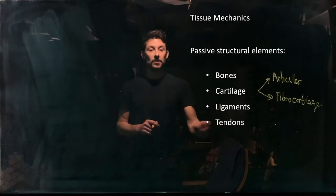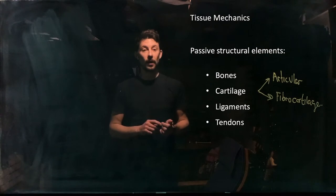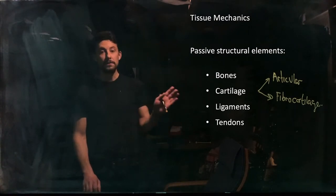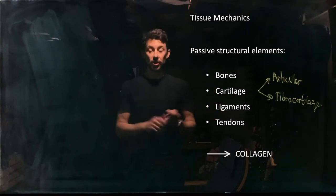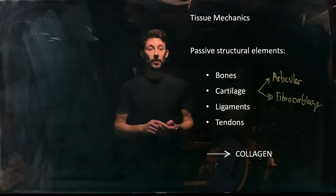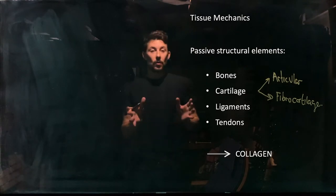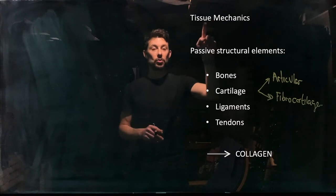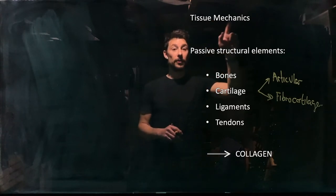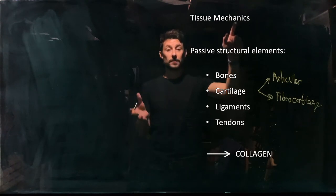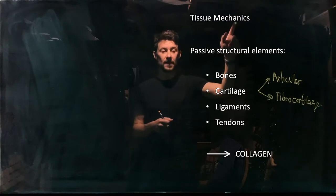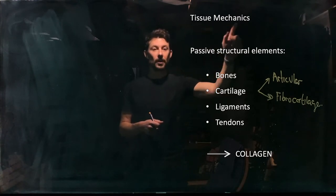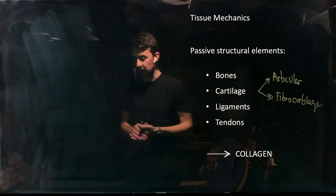We've also got ligaments and tendons - those four different structural tissues. All of these have in common that they are built using a material called collagen. So talking about tissue mechanics, we're going to cover tissues first, then basic mechanics - because that's probably something many of you haven't had much exposure to, or it's been a while since first-year physics - and then we'll talk about tissue mechanics together.